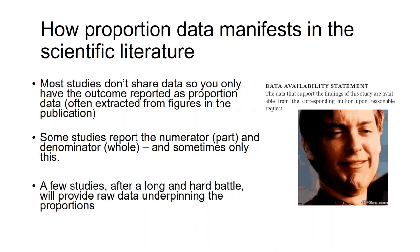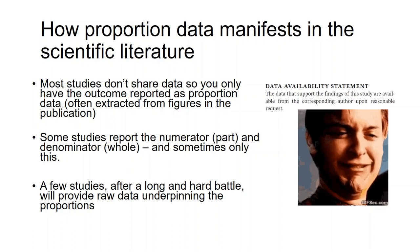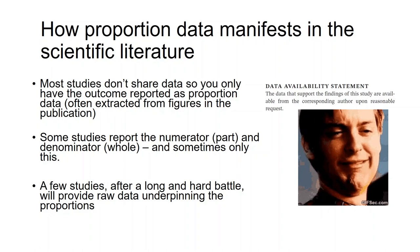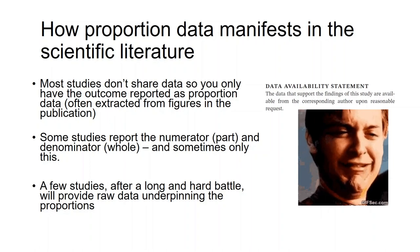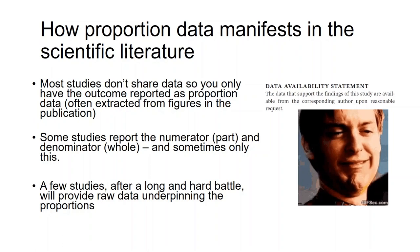How does proportion data typically manifest in the scientific literature? Typically we don't have the raw data, and we're limited by what studies present. Typically, studies only present proportion data in their figures. Some studies won't even present that proportion data directly, and they'll present figures of the numerator and denominator data from which we have to calculate proportions. And then alongside that, a few studies after a long, hard battle will provide raw data.